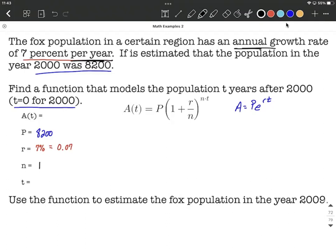Now we don't know a of t, and we don't know t. So as we put these all together, our formula is going to be a of t equals 8,200, goes in for p, 1 plus 0.07 over 1 raised to the 1 times t power.